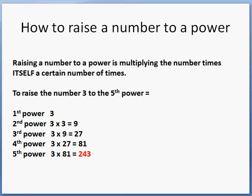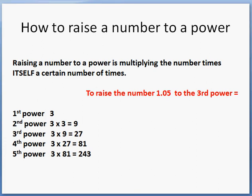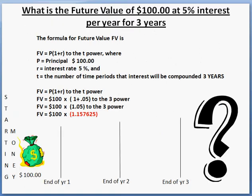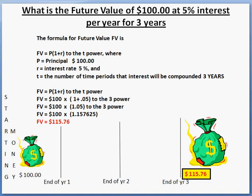Now, what about the 1.05 we were dealing with? To raise 1.05 to the third power: the first power is 1.05; squaring it, we multiply 1.05 times itself and get 1.1025; then to raise it to the third power, we multiply 1.1025 by 1.05 again and get 1.157625. Substituting that back into our equation, we multiply 1.157625 by 100 and get our previous answer of $115.76 — exactly how we computed it longhand.